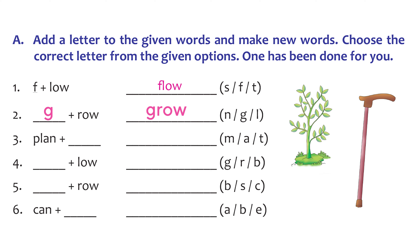Let's look at the third one. We have the word 'plan'. We can add the letter T at the end of the word. When we add it, we get a new word called 'plant'. Now the fourth one — again we have 'low'. Let's try adding the letter B in front of it. It becomes a new word, 'blow', like we blow air.